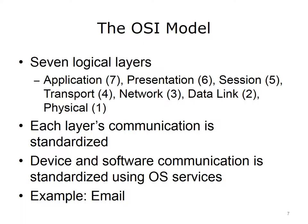The NIC calls on services to encode the email for transport out of its port or over the air through an antenna. Then, when the next device — such as a switch, router, or even an email server — receives the email electronically, the receiving device uses its hardware and services to process the email. The next few slides will examine each of the layers of the OSI model in a little more detail.